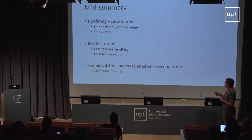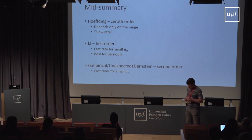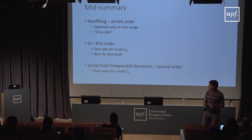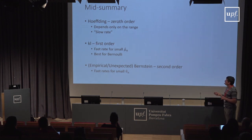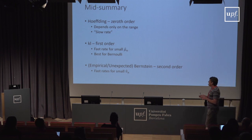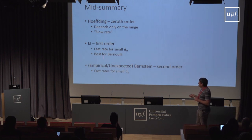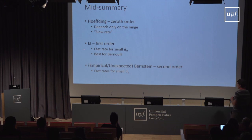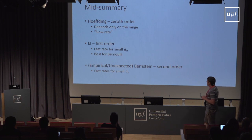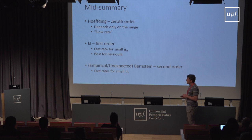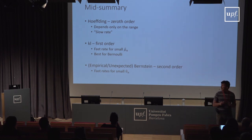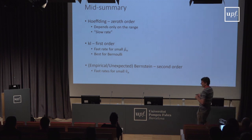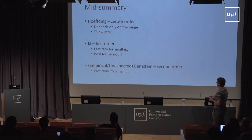A quick summary of the inequalities: Hoeffding's inequality is the zeroth-order inequality — it doesn't exploit any distribution properties beyond the range, giving slow sqrt(n) rates. The KL inequality is a first-order inequality with fast rates when the empirical mean is small, and is the best inequality for Bernoulli random variables. The empirical Bernstein inequality is a second-order concentration inequality that gives fast rates when the empirical variance is small.